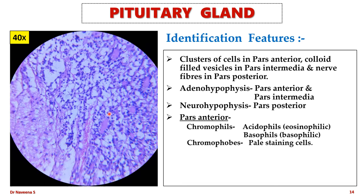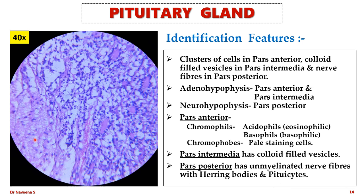Pars intermedia has colloid-filled vesicles and loosely packed pale-staining cells which may secrete melanocyte-stimulating hormone. Pars posterior has unmyelinated nerve fibers with Herring bodies at their nerve terminals, where they store vasopressin and oxytocin. These nerve fibers are supported by supporting cells called pituicytes.